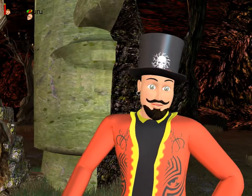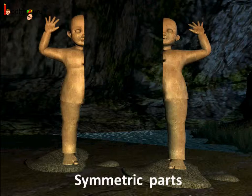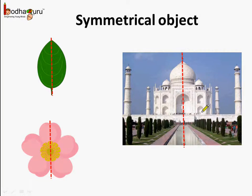Also, if you remember, even the statues were broken into symmetric parts. So the wizard was really crazy about symmetry. So remember children, what is symmetry? When there is an exact match in shape and size between the two halves of an object, it is said to be symmetric — like the two halves of this leaf, the two halves of the flower, and the two halves of the Taj Mahal monument.